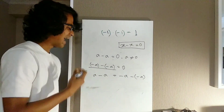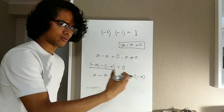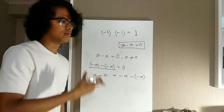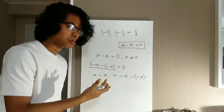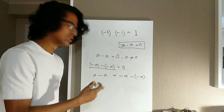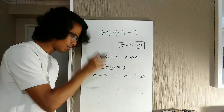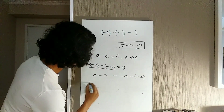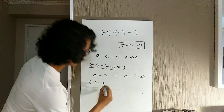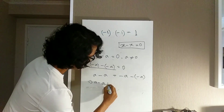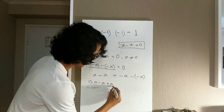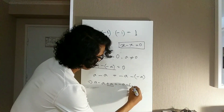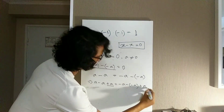What I will do now is add a on both sides of the equation. Because of a basic rule of algebra, we know that if we add the same number on both sides of an equation, the equality will hold. So I'm going to add a on both sides.